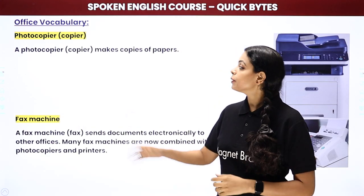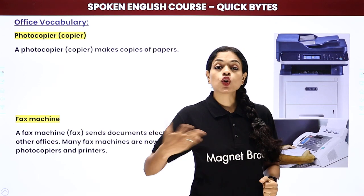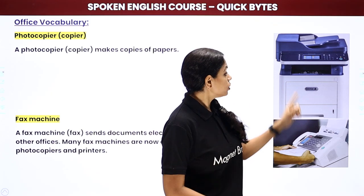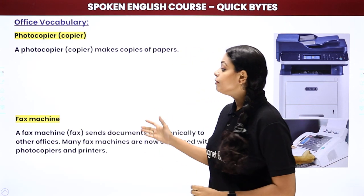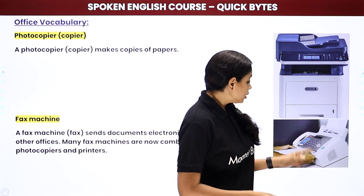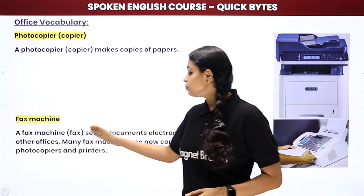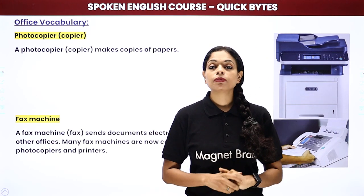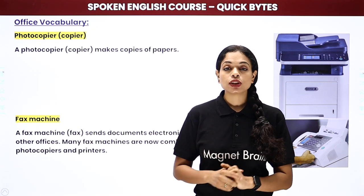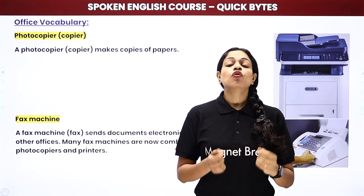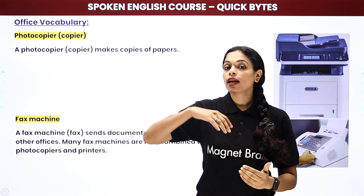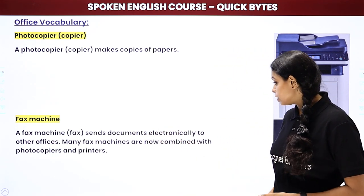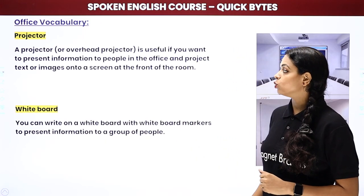Then we have a photocopier. A photocopier is different from a printer — it doesn't print from a device, it makes copies. You give it one copy and it can make ten, fifty copies. This is a photocopier machine. Then we have a fax machine. A fax machine sends documents electronically to other offices. For example, if you fax a document from a Mumbai office to a Delhi office, that document gets printed out at the Delhi office. A fax machine combines a photocopier and printer.